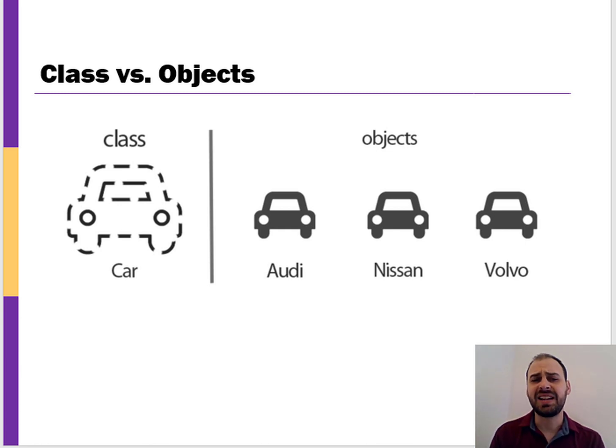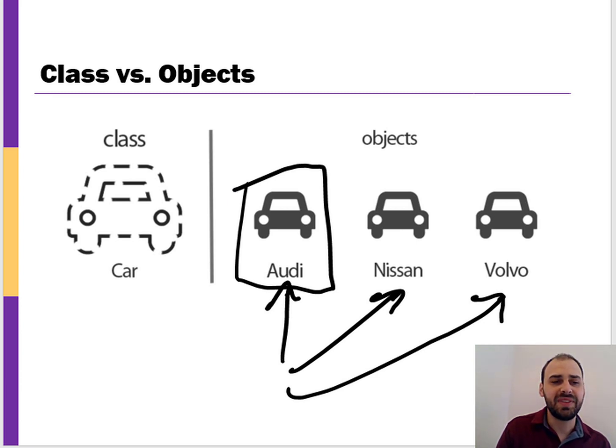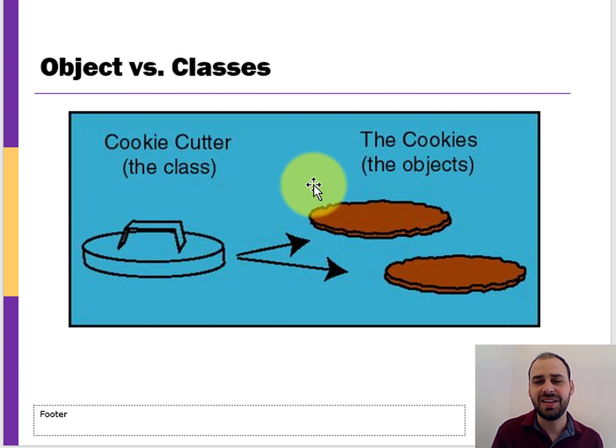Now a class is your generic construct. So think of like a car. And then you have these objects which are these instance of a class. So you have all these different types of cars. You can have an Audi, a Nissan, Volvo, Subaru, whatever. And they have all their different unique properties. So you've got all these basically unique instantiations of each particular car. So you could think of this as almost being like a cookie cutter. The class is the cookie cutter and then each cookie that you create with that is the actual object. So here the cookie cutter is the class and the cookies themselves are the objects.